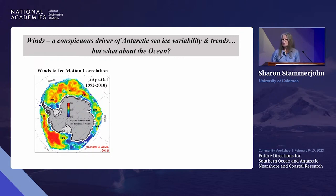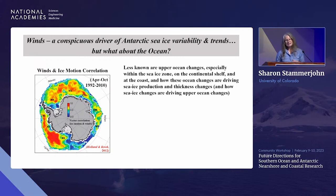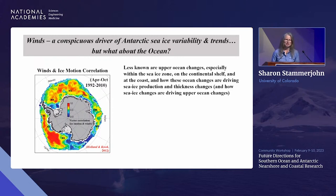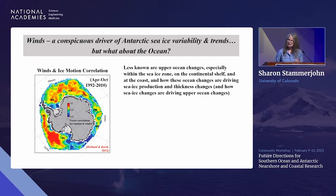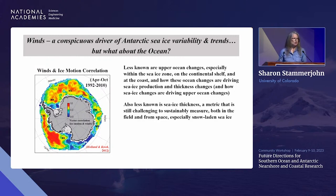What explains this transition from record high to record low, in line with the background decreasing trend? It points to the ocean once more, but we don't really know what those ocean changes are — we can infer them and use models, but we lack the data. We really need ocean observations within the sea ice zone, on the continental shelf, at the coast, because it's the ocean that's driving the changes in sea ice production and thickness. We don't know much about thickness changes, which is still a challenge to measure.